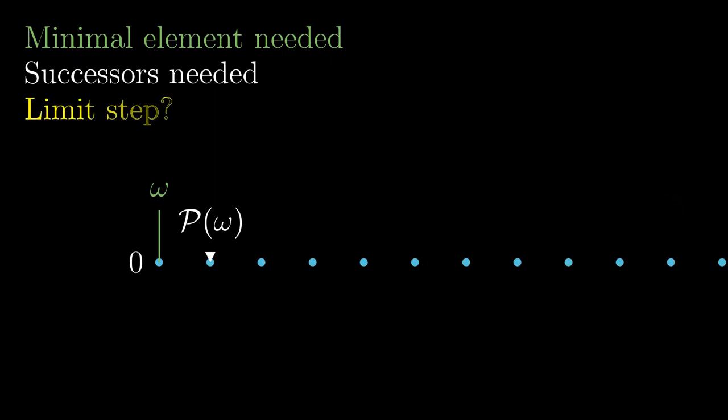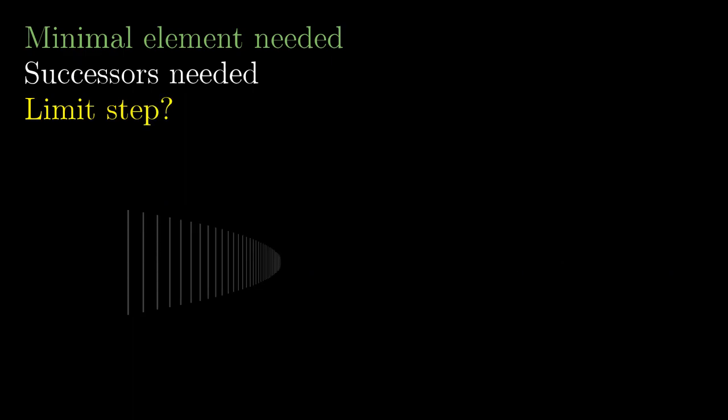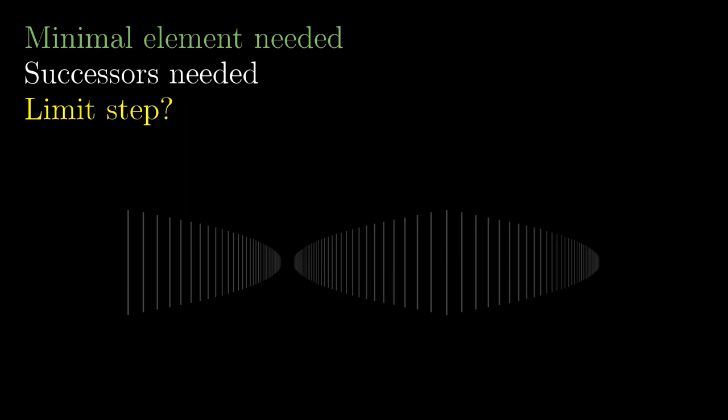But what about the limit step? Take the following example: one infinite increasing sequence and a two-sided infinite sequence behind it. The set contains its first element, so we can assign omega. Every element here has a successor, so we can run successor steps and get P omega, P P omega and so on. But what next?